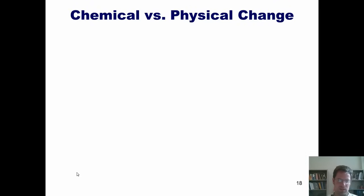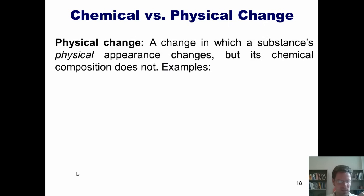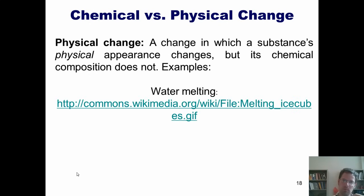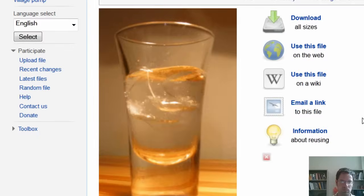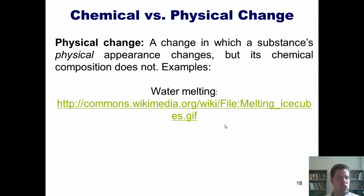We now turn to a different subject: chemical versus physical change. Is there a difference between a chemical change and a physical change? As it turns out, yes there is. A physical change is a change in which a substance's physical appearance changes, but its chemical composition does not. Here are some examples. When water melts, it turns from a solid to a liquid. Is the liquid water still H2O? Is the solid water H2O? If the answer is yes, and it is, then melting water is not a chemical change. It's just a physical change.